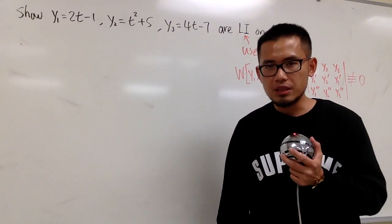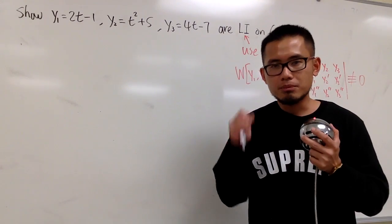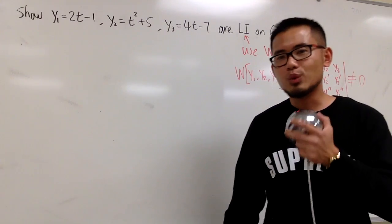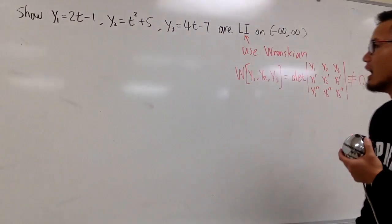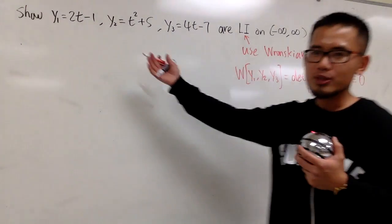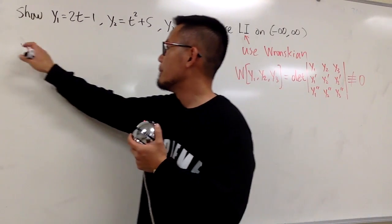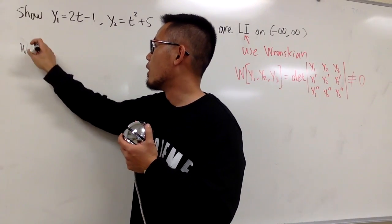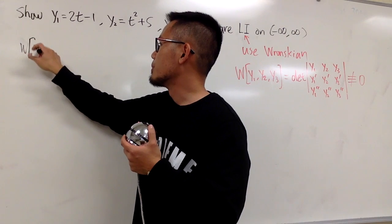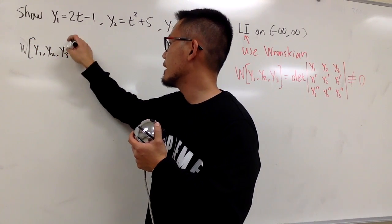To show LD, you must use the definition, the c1, c2, whatever. Anyways, here we go. Let me just put this in action. I'm going to find the Wronskian for this function. So I put on y1, y2, y3.